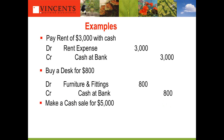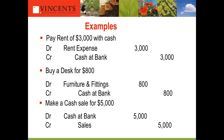Last example: make a cash sale for $5,000. Cash at bank is an asset, debit in nature, and it's increasing so we debit it. Sales is a revenue item which is credit in nature, so we credit it. So there are the three journals to record those transactions in the accounting system.